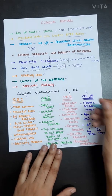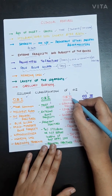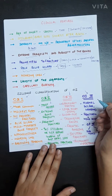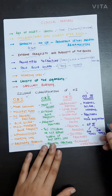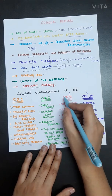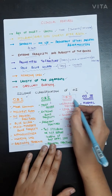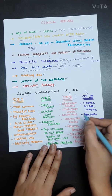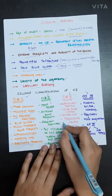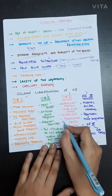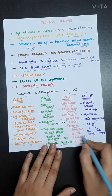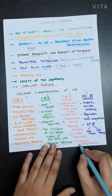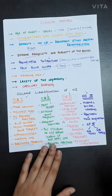In osteogenesis imperfecta type 3, opalescent dentine is seen — a feature also possible in type 4. Type 3 features include opalescent dentine, limb shortening, altered scleral hue, triangular facies, frontal bossing, in utero fractures, and pulmonary hypertension.